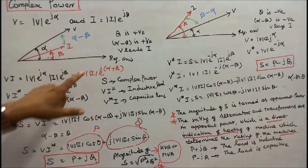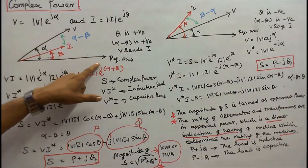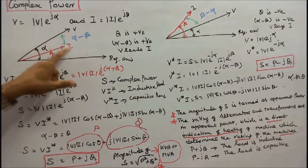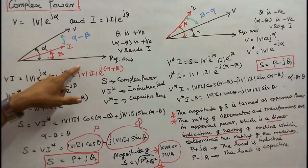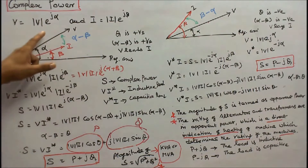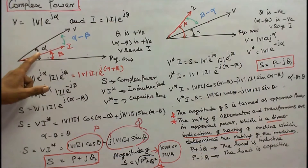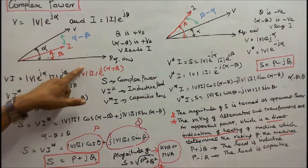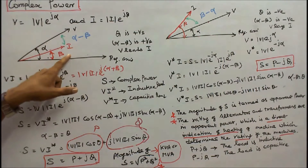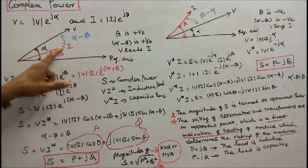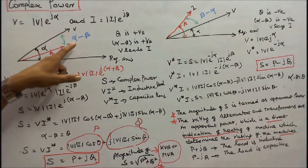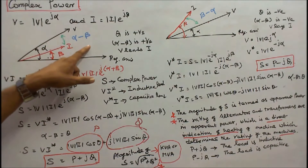This is the reference axis. This is voltage. This is current. The angle between the reference axis and voltage is alpha. The angle between the reference axis and current is beta. Therefore, the angle between voltage and current is alpha minus beta.